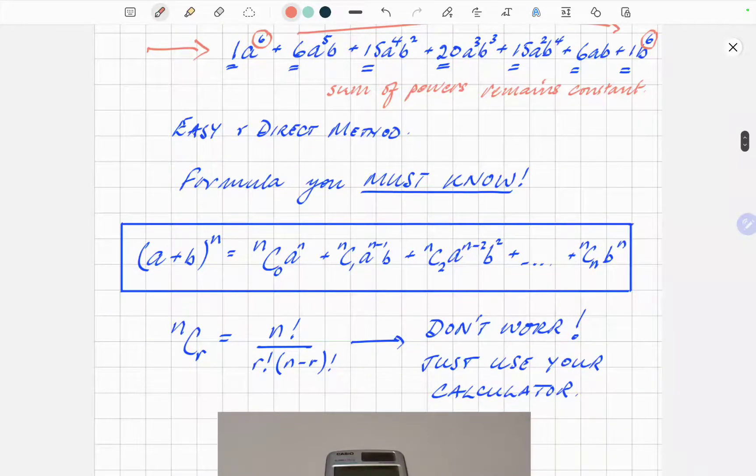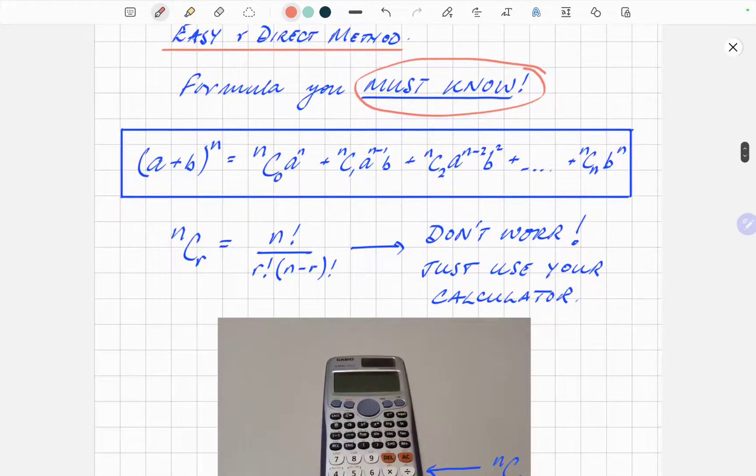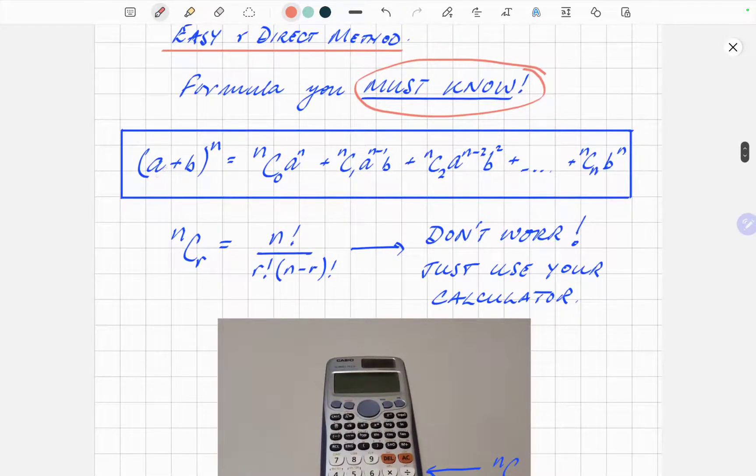What you need for your actual exam, this is the important bit, the easy and direct method. This formula you have got to know, and I'll give you two versions of it. One is for any given binomial term (a + b) to the power n, it's NC0 times a to the power n, NC1 times a to the power n minus 1 times b, etc. I'm not going to talk you through it. You can see it on the screen. You've probably got it in your textbooks.